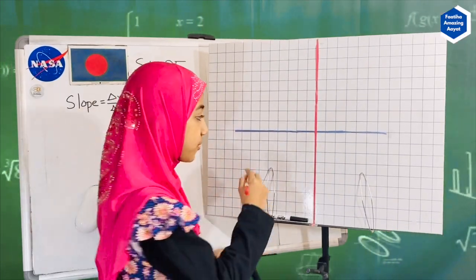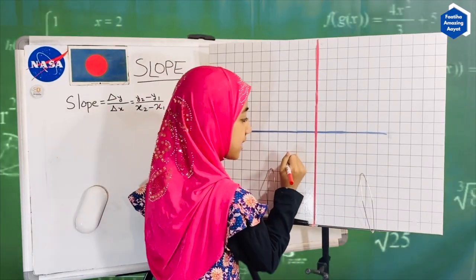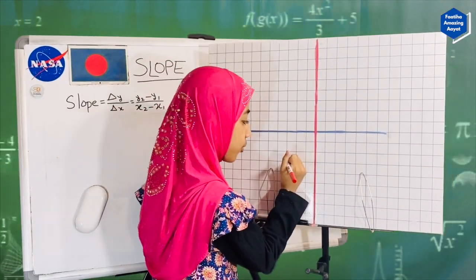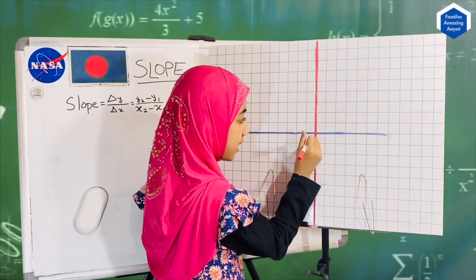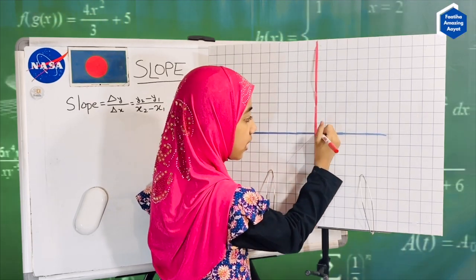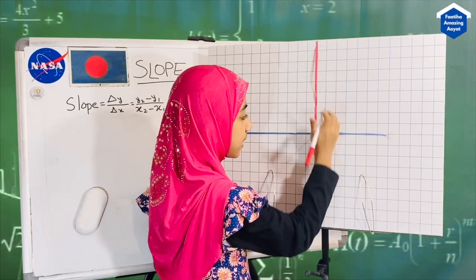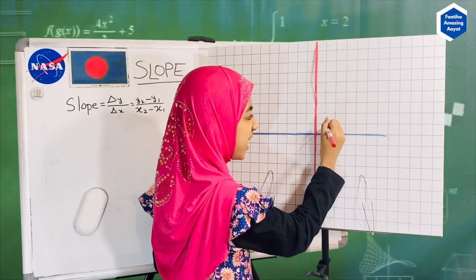Now I will show you in real life with this graph. I'm going to find the slope from this graph. Let's say I just pick any point — for example this one — and I'll draw a line through that, up to here.